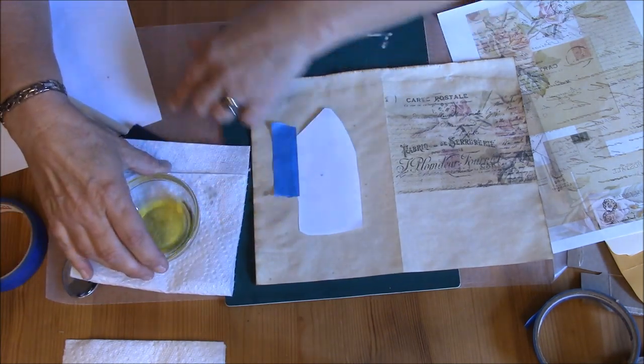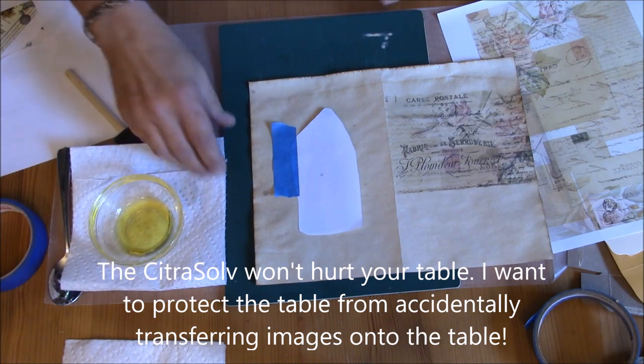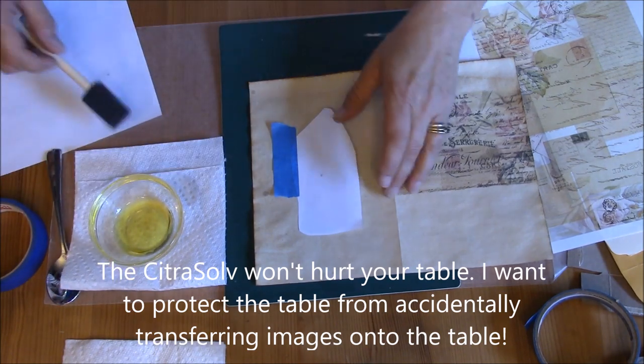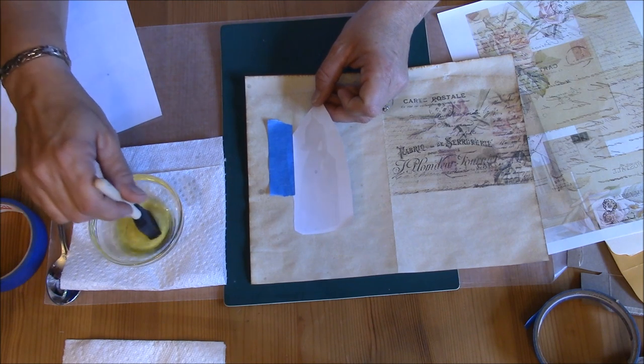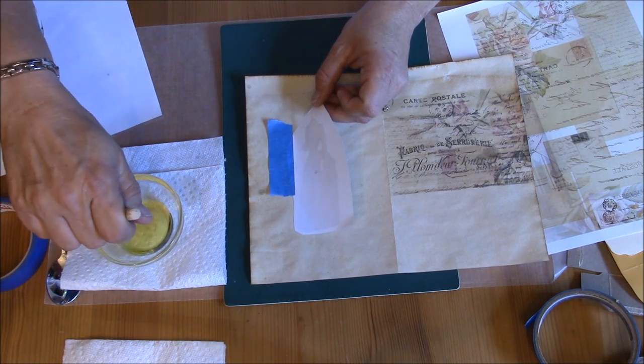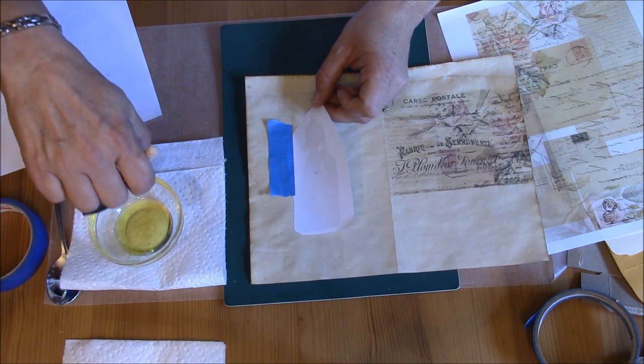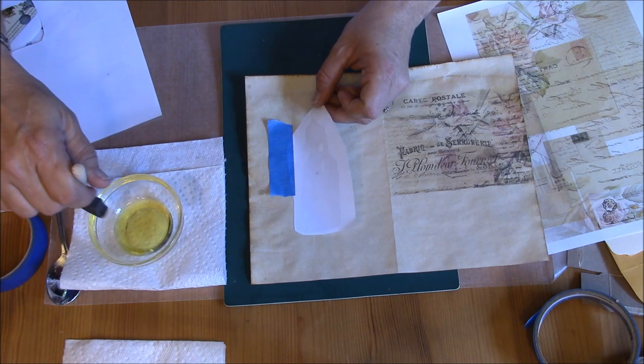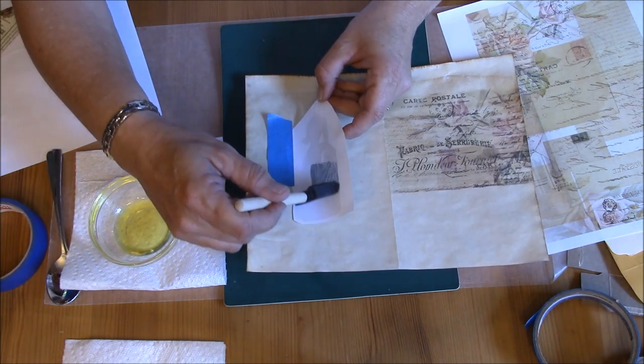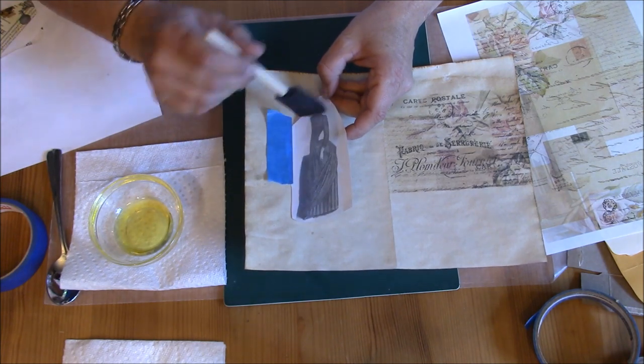I have some wax paper down here to protect my table. I'm going to hold it up and I'm dipping this in and squeezing some of the excess out along the rim of the bowl because it does not take a lot. You basically just want to get it wet over the image part.